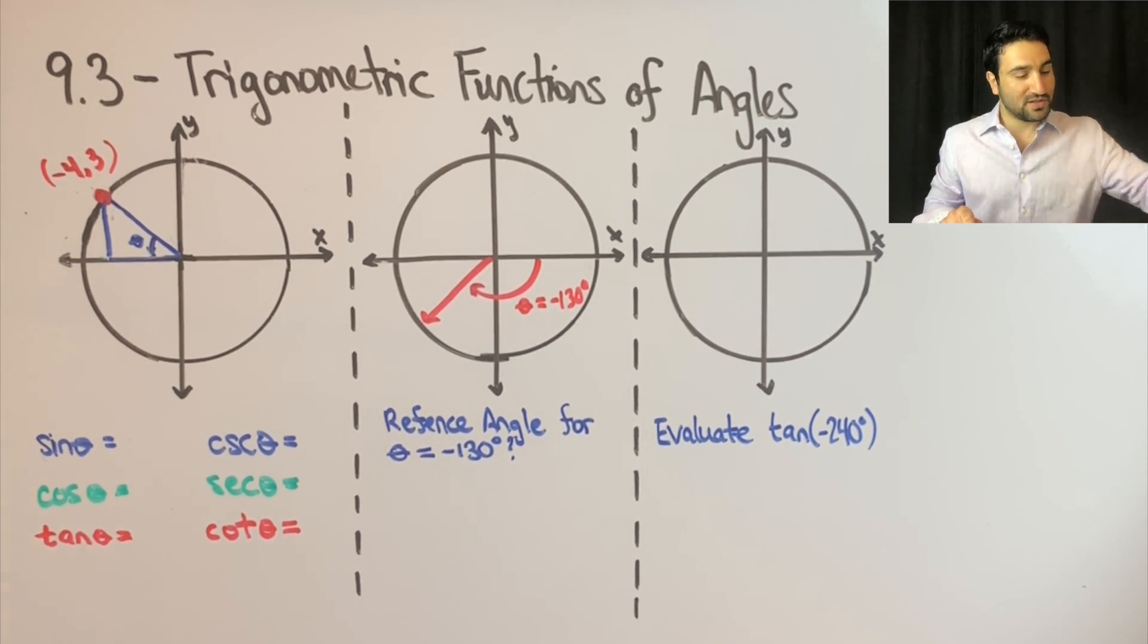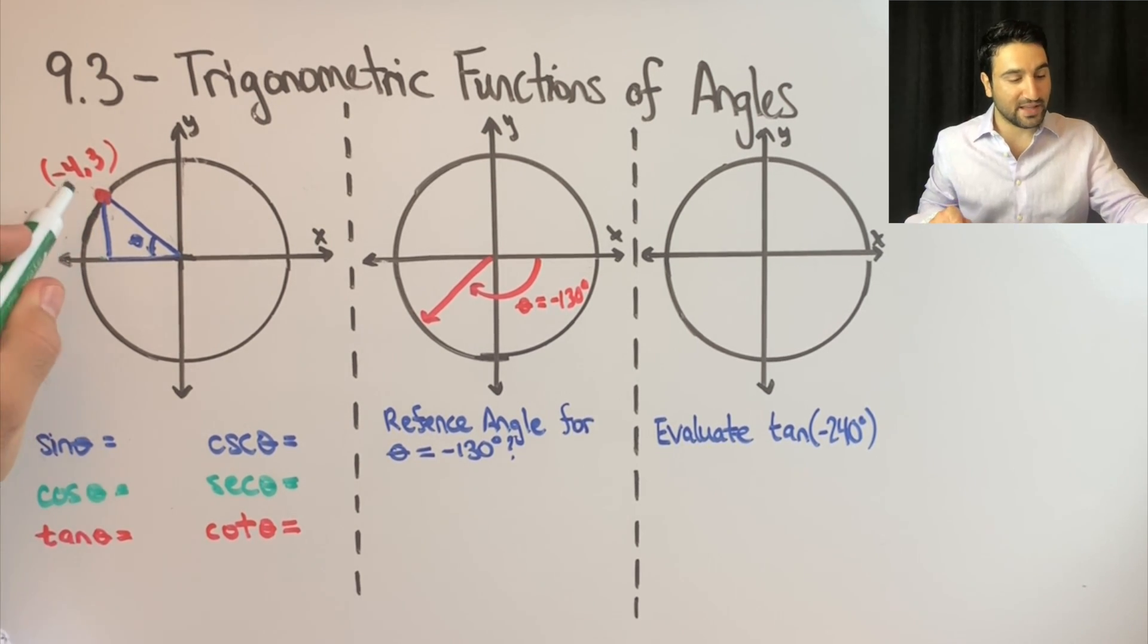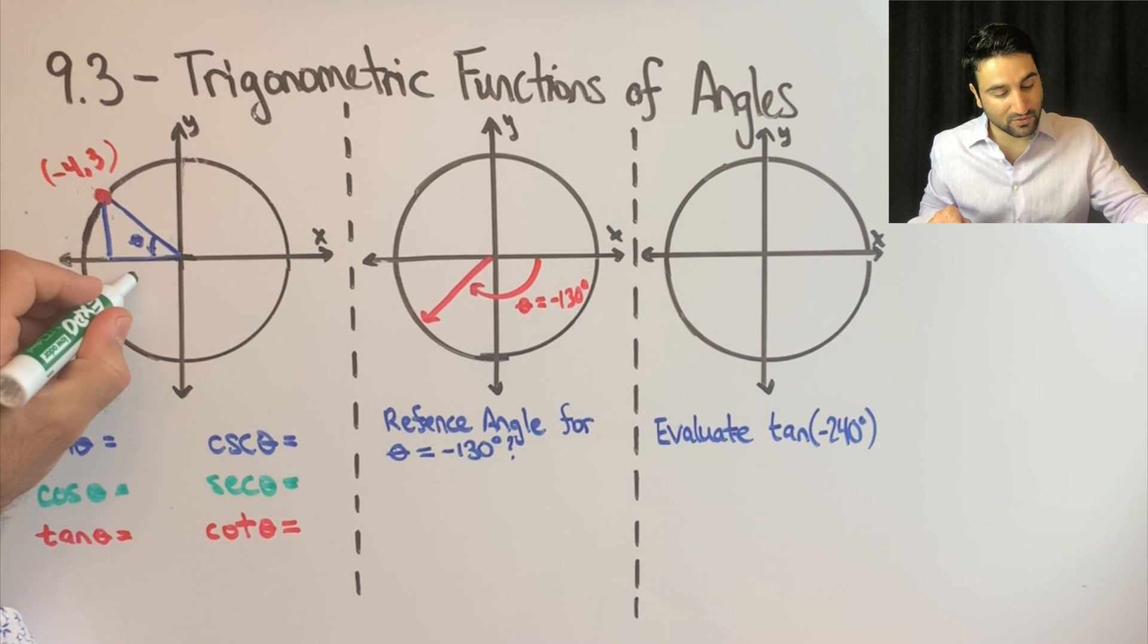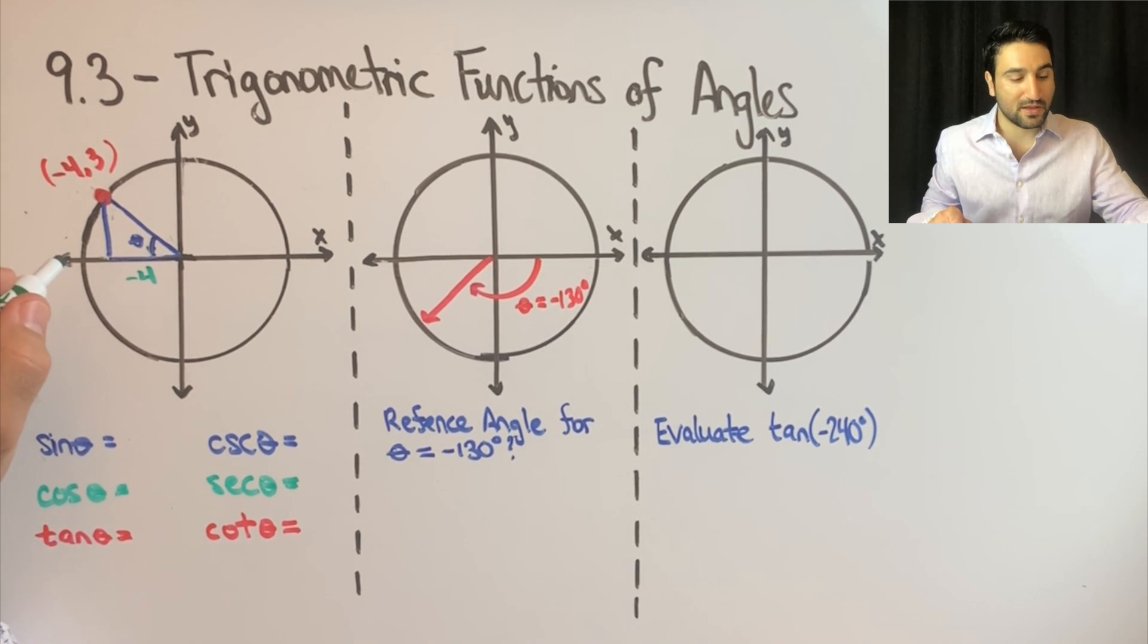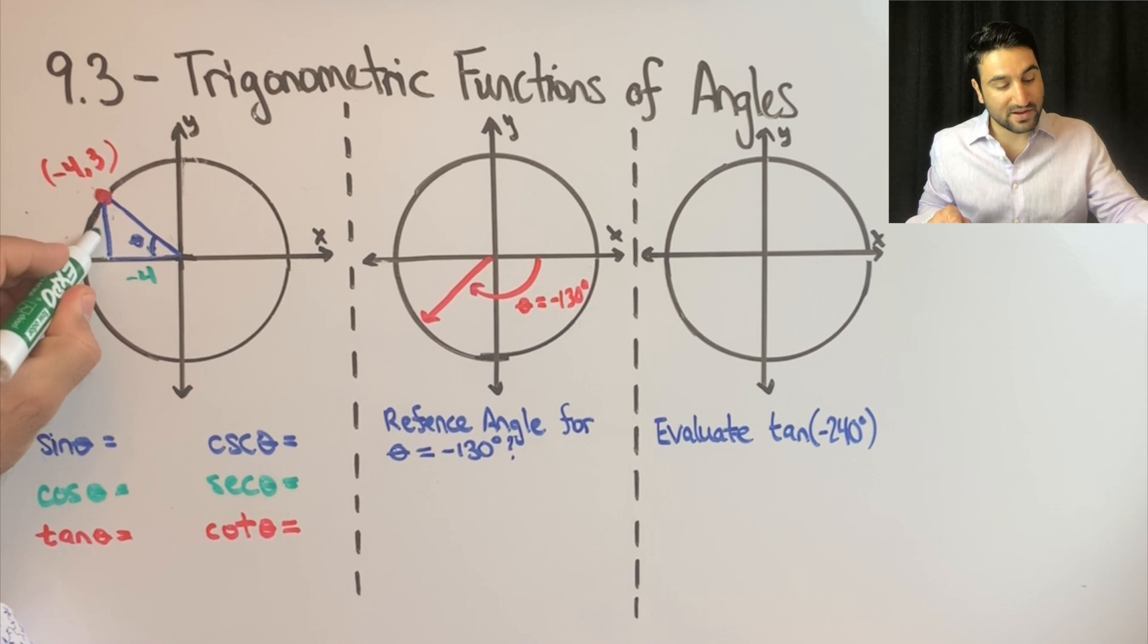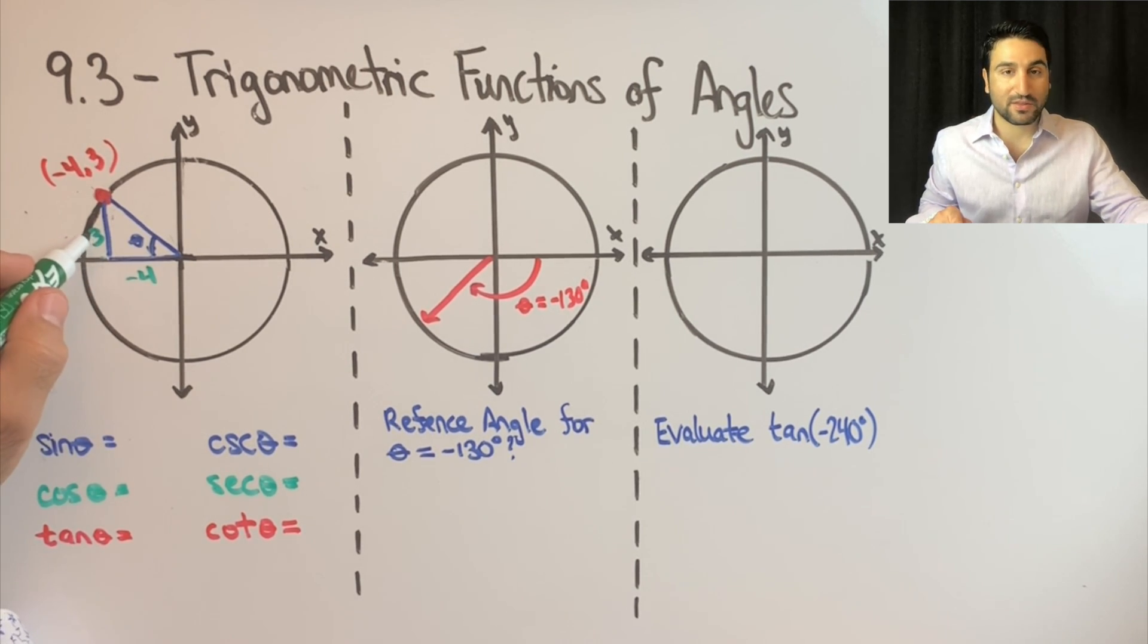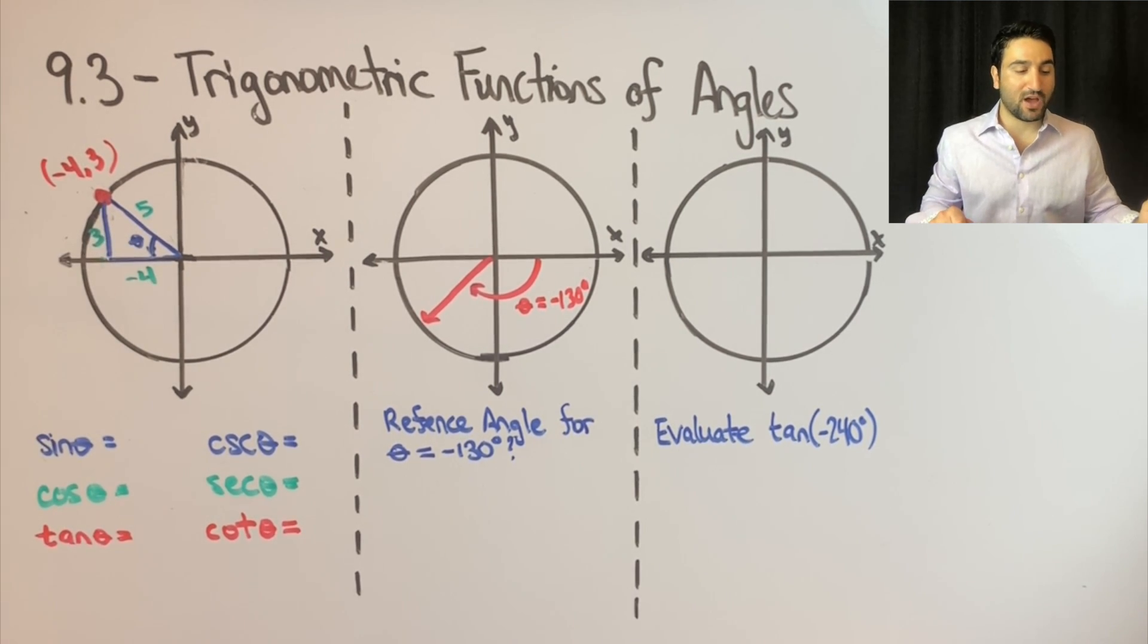This reference angle will be our theta. We just need to complete the lengths of the legs here. So if this triangle is negative 4, 3, negative 4 is the x distance here, it's negative 4 and then a rise of 3. So we're going to call that negative 4 and we're going to call this 3. And if you do Pythagorean theorem, you'll see that 3 squared plus negative 4 squared, the square root of that is 5. So we have the hypotenuse leg of 5.